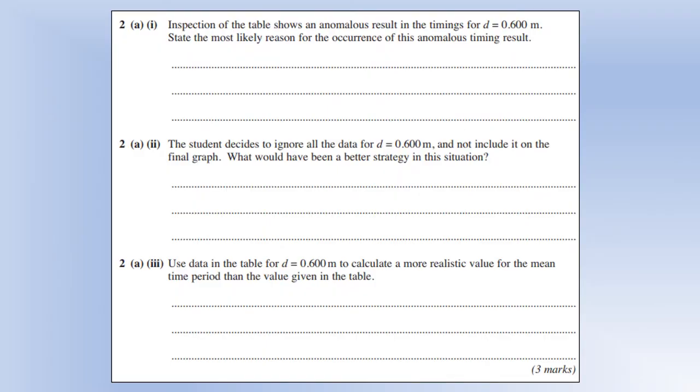Okay, so inspection of the table shows an anomalous result in the timings for d equals 0.600, state the most likely reason for the occurrence of this result. So if you look back at the table, I've put a copy of this exam paper in the description if you want to download a copy to make it easier. But what you'll notice is the second time period, the repeat two, is about one time period below the other times.